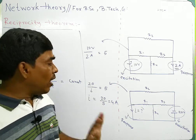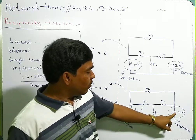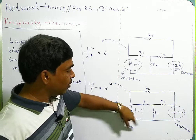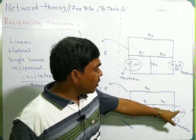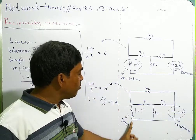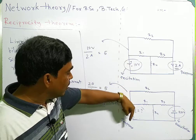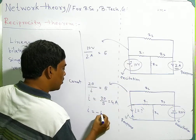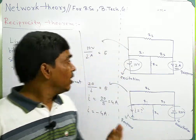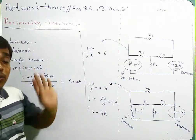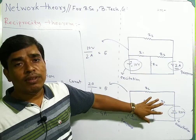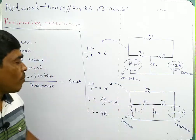Now you have to determine the direction of the current from the source. Due to the polarity of the voltage source, the current must flow in this direction — not the other direction. Therefore, the current is minus 4 amperes. This is how you apply the Reciprocity Theorem to solve this type of problem.